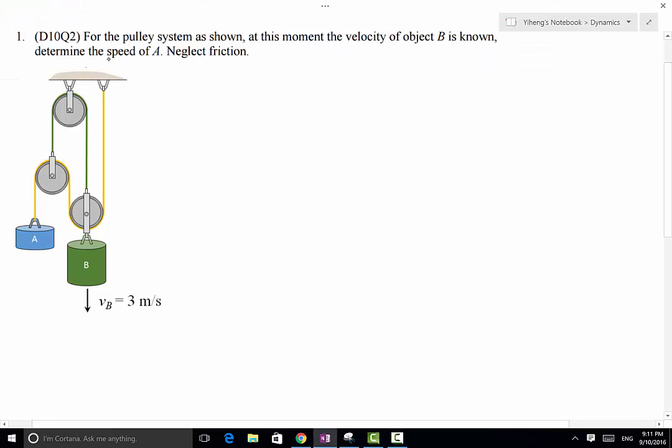In this problem we have two objects A and B connected through a pulley cable system. We have two continuous cables, a yellow one and a green one, and they both have fixed lengths which are important for our later analysis. If the velocity of object B at this point is known to be three meters per second downwards, we need to determine the speed of object A.